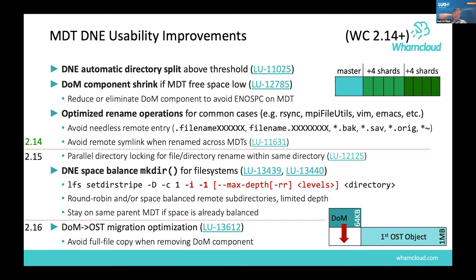Another improvement in the metadata area is handling rename-heavy workloads, which weren't seen previously in traditional HPC. Directory and file renames were optimized, currently only for renames within a single directory, but this helps many workloads like rsync. Because a new crush hash function was added for directory splitting, renames were also optimized to detect common patterns like temp filenames created with dot-XXXXX for mktemp. If you rename those files within a crush-hash directory, they stay on the same MDT without generating remote links.